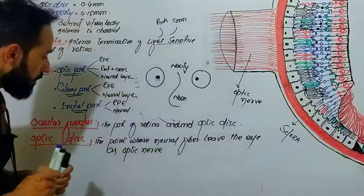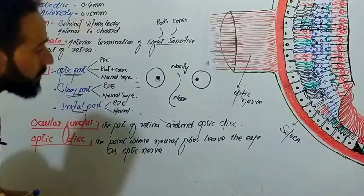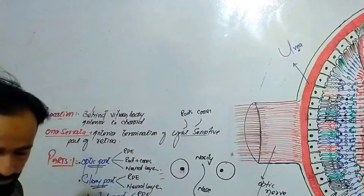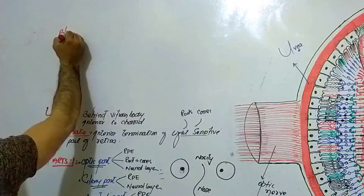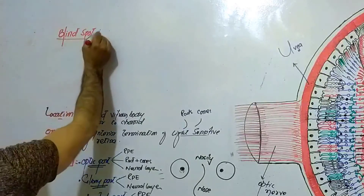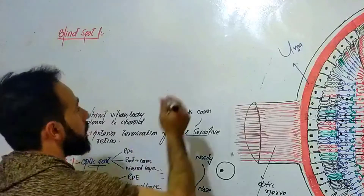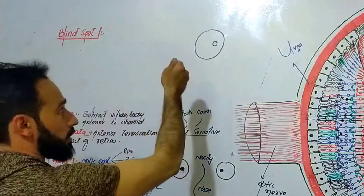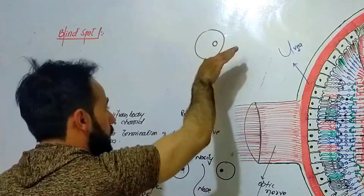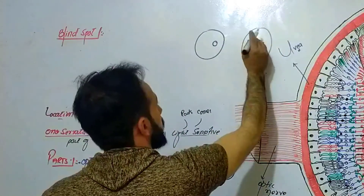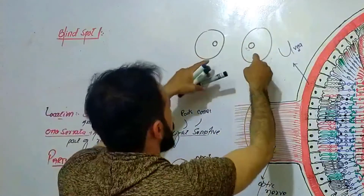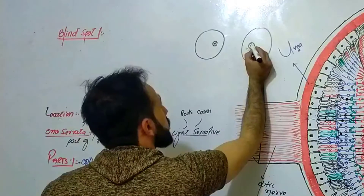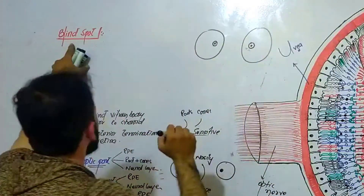What is the blind spot? Looking at the retina, you find the optic disc depression nasally in each eye. At the center of this optic disc, you will find another small depressed area, and that depressed area is called the blind spot.